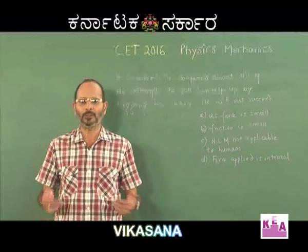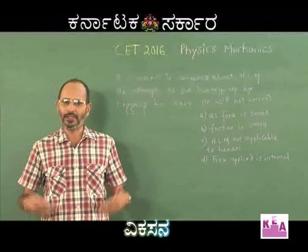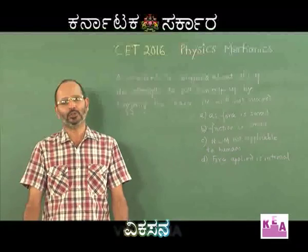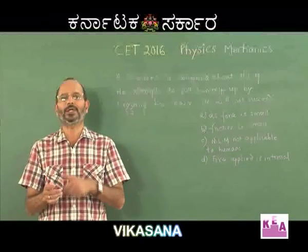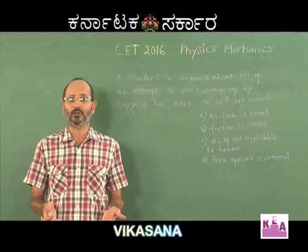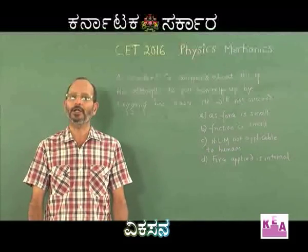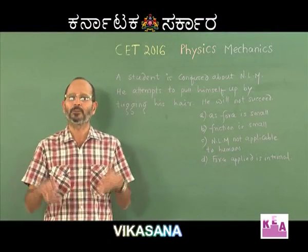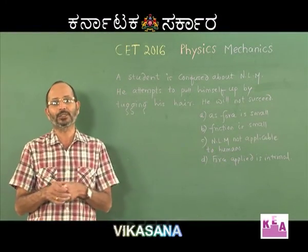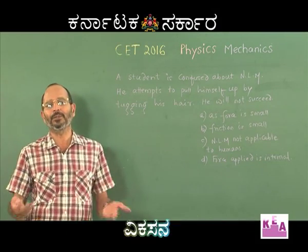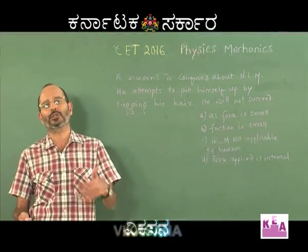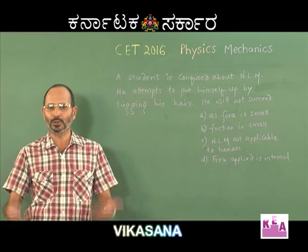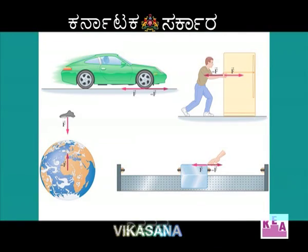For example, when I am standing on the floor, my weight acts on the floor and the reaction of the floor acts on me — that forms an action-reaction pair. Do not mistakenly say that mg and the normal reaction are an action-reaction pair just because they are equal and opposite. Both mg and normal reaction act on me alone, and action-reaction pairs never act on a single body — they always act on two different bodies.